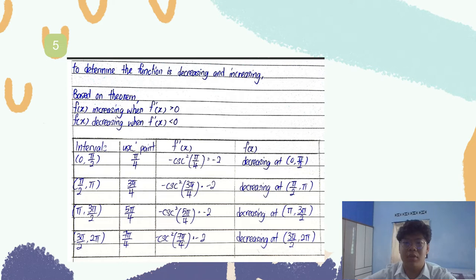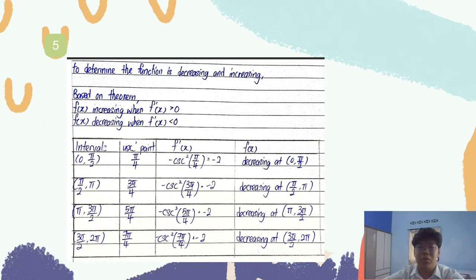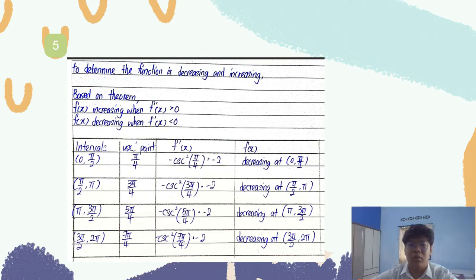Based on the theorem, the function is increasing when the first derivative is positive and decreasing when the first derivative is negative. To determine this, we check intervals: (0, π/2), (π/2, π), (π, 3π/2), and (3π/2, 2π). Choosing one point in each interval and substituting into the first derivative gives a value of negative 2, which is negative. So the function cot x is decreasing on (0, 2π).